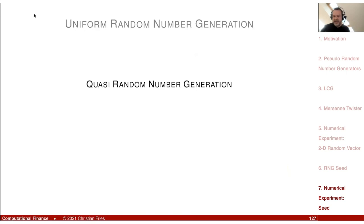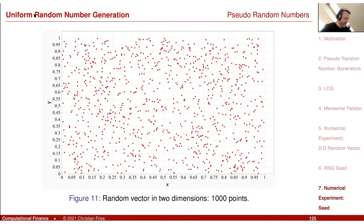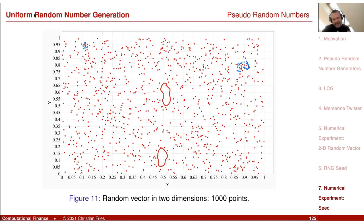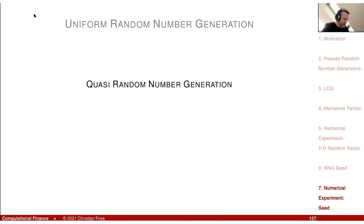That was an introduction into random number generation. The next session is quasi-random number generation. To motivate that and to finish: looking at the picture, it looks random, but is it really good that there are large areas with no values? What if the function changes only in that region? And there are some regions with many values clustered together — is that really good? We can improve the Monte Carlo algorithm by generating a more equidistributed sequence. These are the quasi-random number generators.